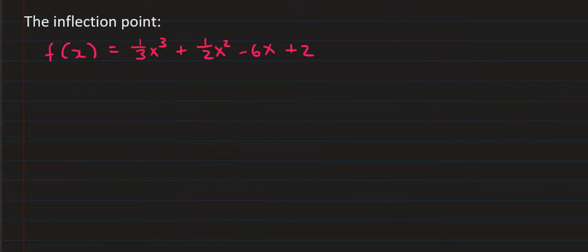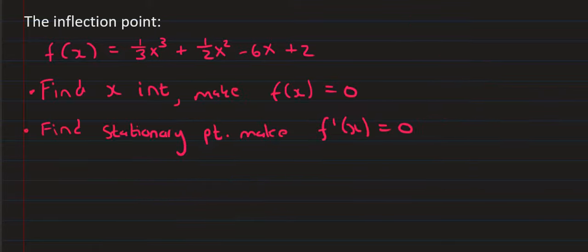In summary: to find the x-intercept, we make y equal to zero. And to find the inflection point, you make the second derivative equal to zero.